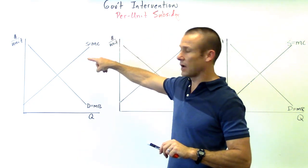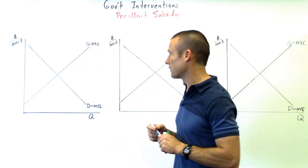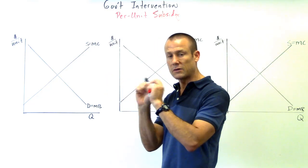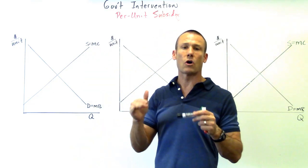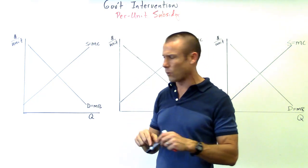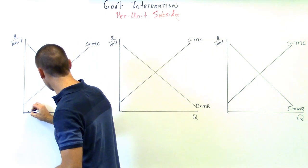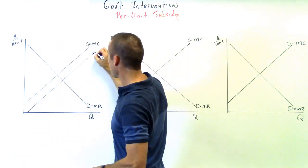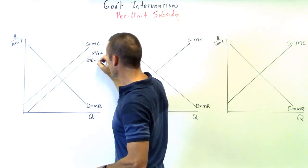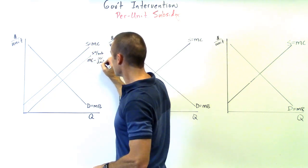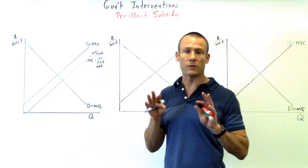This first graph is the farm subsidy — we're giving the money to the producer, the supplier of the good. Every time they produce the good they receive a per unit subsidy, so their marginal cost is going down. I'm going to draw the new supply curve: this is supply with subsidy, it's marginal cost minus the per unit subsidy, because we're lowering their per unit cost.